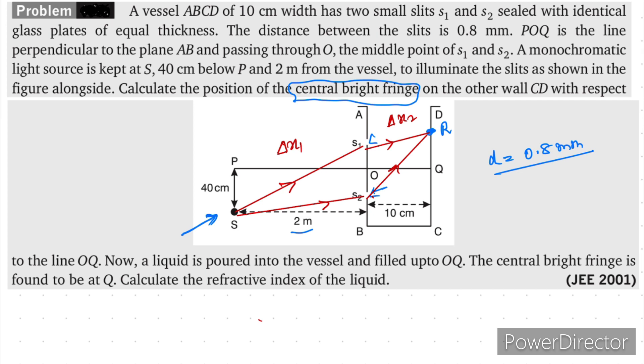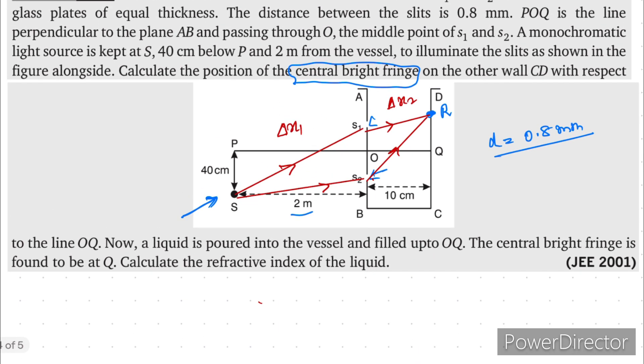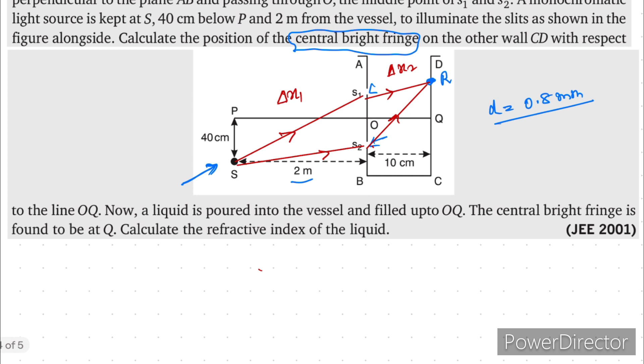In this portion suppose delta x1 is the path difference between these two rays and in this portion delta x2 is the path difference between two rays. Then as we know, at the central bright fringe, the path difference is 0. That means this path difference, delta x1 and delta x2, that must be equal.